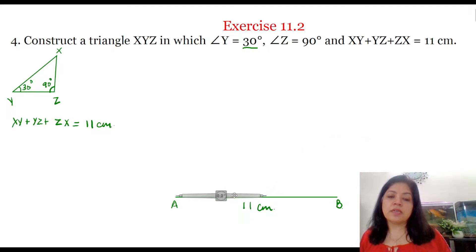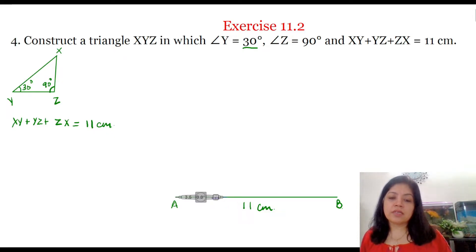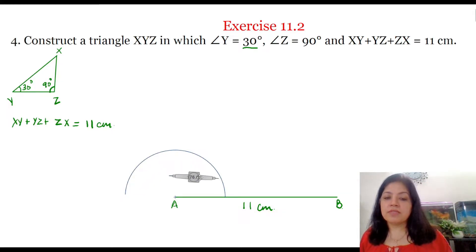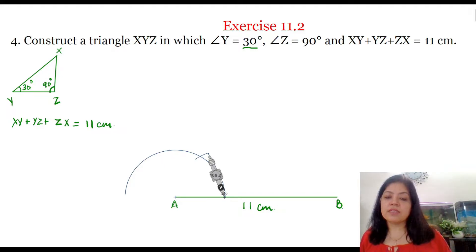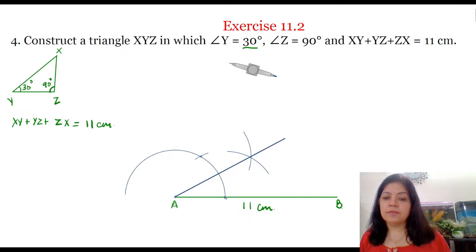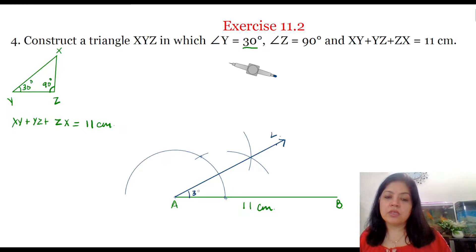We'll first construct angle A equal to 30 degrees, which is equal to angle Y. To construct a 30 degree angle, we'll place our compass at A and with any convenient radius, draw an arc which touches the line AB at a point. With the same radius, place the compass there and cut this arc — this gives us a 60 degree angle. To get 30 degrees, we'll bisect this angle. This gives us 30 degrees. Let this ray be AL, so angle LAB is equal to 30 degrees.